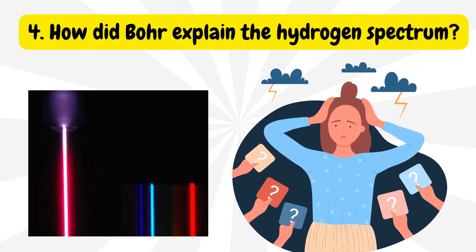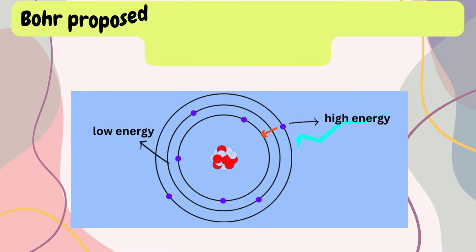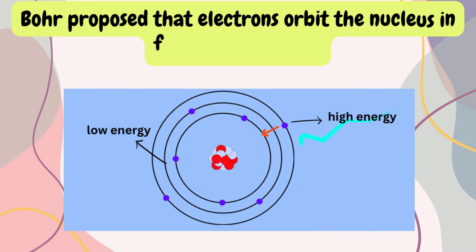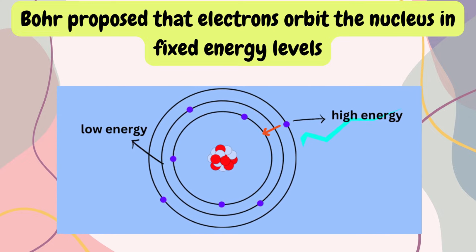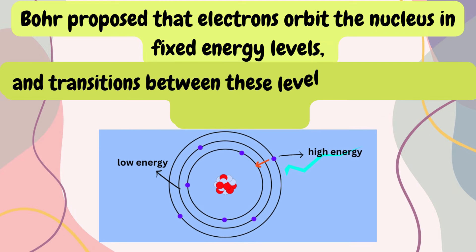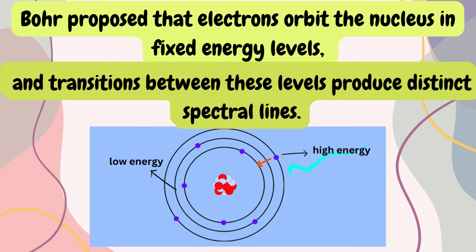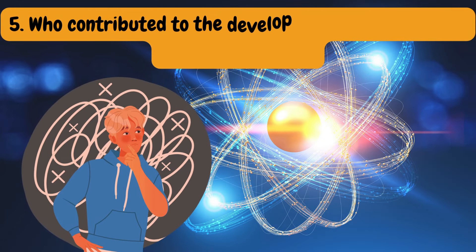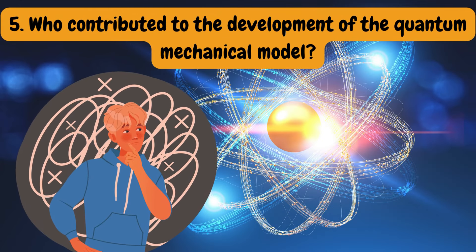Question four: How did Bohr explain the hydrogen spectrum? Niels Bohr explained the hydrogen spectrum by proposing that electrons orbit the nucleus in fixed energy levels, and transitions between these levels produced distinct spectral lines. Question five: Who contributed to the development of the quantum mechanical model?